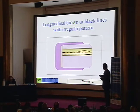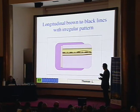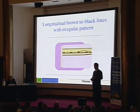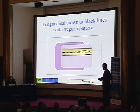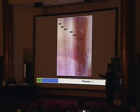If we have an irregular pattern of the lines, it's in favor of melanoma. The lines should be regular in their coloration, in their spacing, and in their parallelism. And then when you have changes in color and spacing, that is a typical case of melanoma.